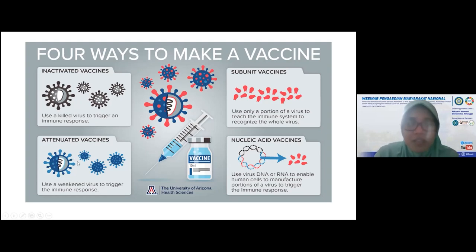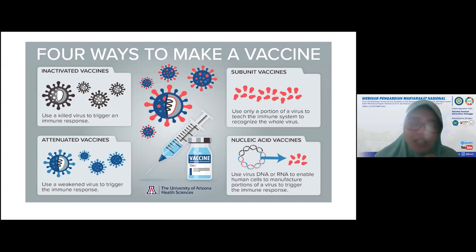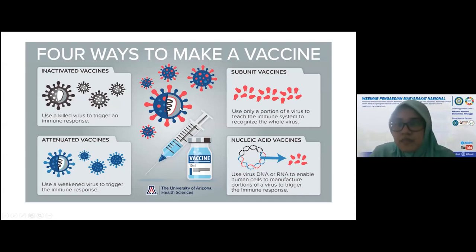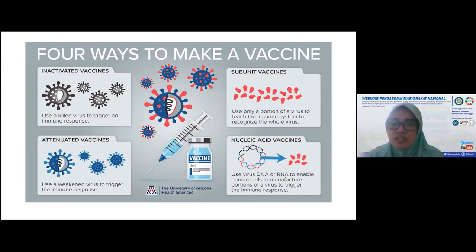Yang kedua yaitu attenuated. Attenuated ini hampir sama dengan inactivated, tapi dia tidak mati. Seperti dorman, mikroorganisme itu tidur. Pada saat diberikan ke manusia, dia tidak akan menyebabkan terjadinya infeksi, tapi hanya pengenalan dari protein dari mikroba tersebut. Ketiga adalah subunit. Subunit ini hanya bagian tertentu saja, misalnya proteinnya saja, atau metabolit sekunder dari mikroba itu, atau seperti vaksin toxoid-nya saja dari mikroba tersebut.